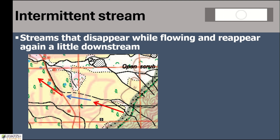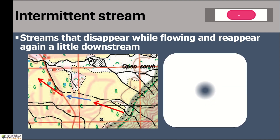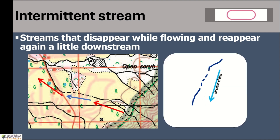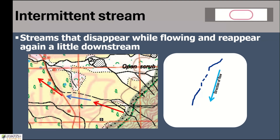These kind of patterns are called intermittent streams. When we draw this, we draw a normal line, then dashes to show the disappearing nature, and again a normal line to show the reappearing and flow of the river.